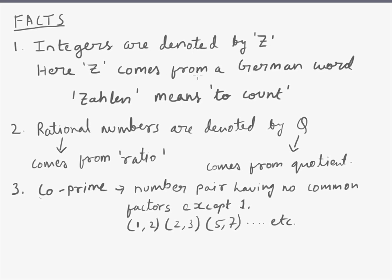Certain facts about the lessons we have learned today. Integers are denoted by Z. Here Z comes from a German word Zalen, which means to count. Rational numbers are denoted by Q. Here rational comes from the word ratio, and Q is the abbreviated form of quotient.